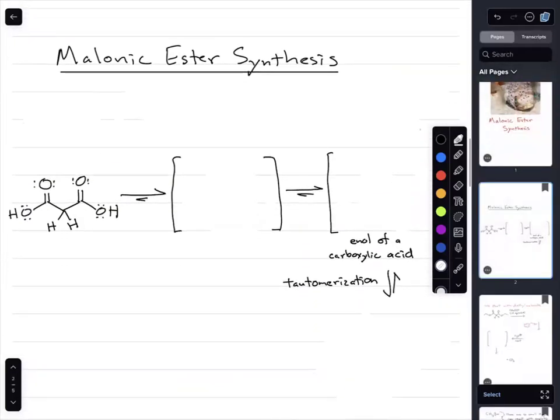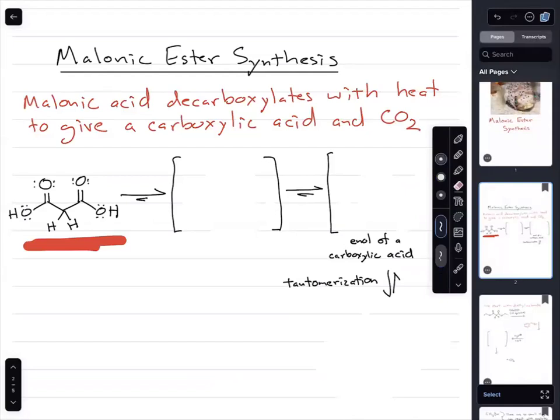The malonic ester synthesis relies on something we haven't told you before. In the acetoester synthesis, we relied on the fact that a beta-keto acid will decarboxylate to generate CO2 and a methyl ketone derivative. It turns out that a diacid will do the same thing. That diacid is called malonic acid.